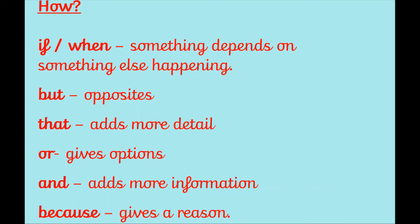So to be successful with using conjunctions, we need to know what each of these conjunctions means and when we should use each one. So let's start with if and when. These two conjunctions are quite similar. We use them both when something depends on something else happening. When is used when it's something to do with the time that these things happen. And if is used to say whether or not the other thing is going to happen.